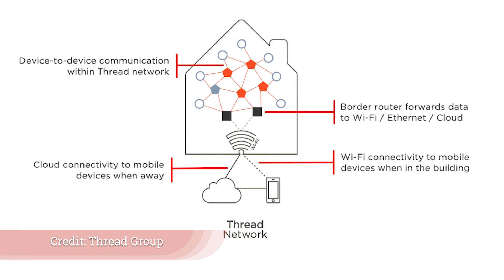Some of the basics of Thread: these are mesh networks, very similar to Z-Wave and Zigbee, which means you can have multiple devices relaying information from one to the next, and then to what is called the end router for a Thread network. You will have heard of hubs on Z-Wave and Zigbee, but now they're called end routers or border routers on a Thread network.